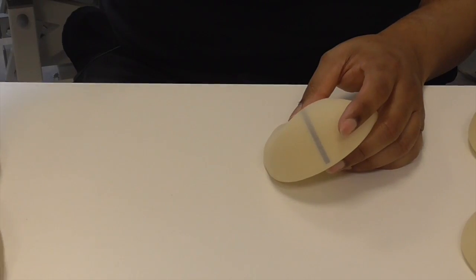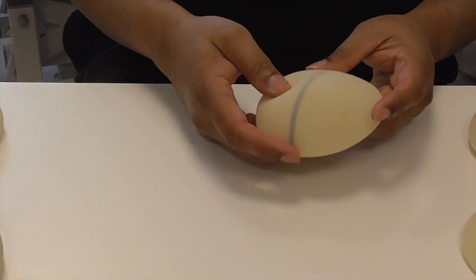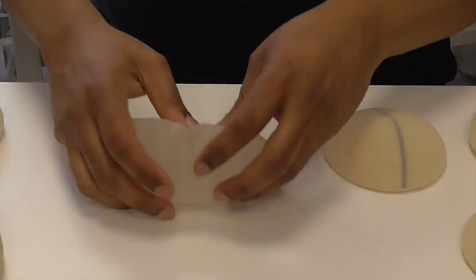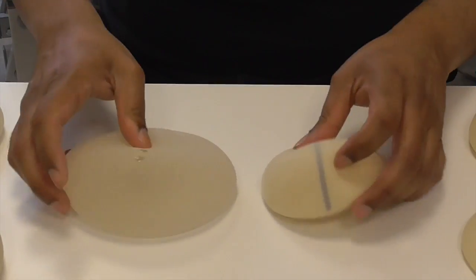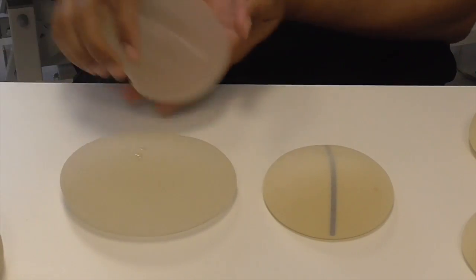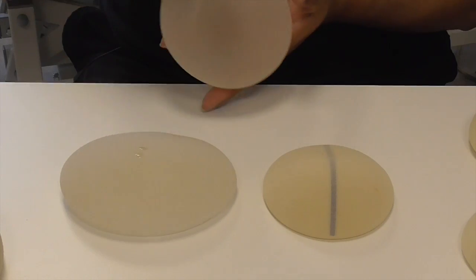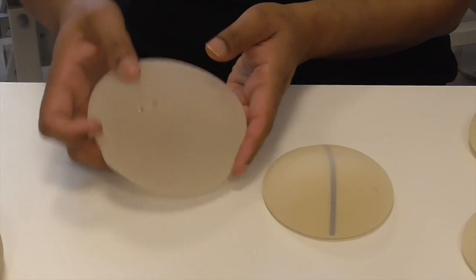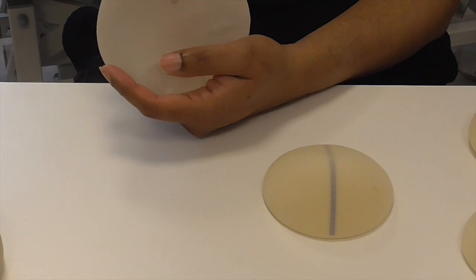We have different sizes, different texture coatings, and different shapes. When you're putting in an anatomical implant, as opposed to a round implant which you can put in any way and it can spin around with no problem, you don't want to put an anatomical implant upside down because that obviously will not give you the kind of aesthetic outcome you want.